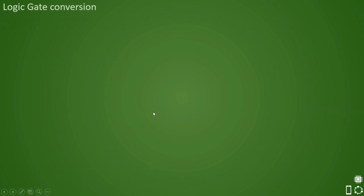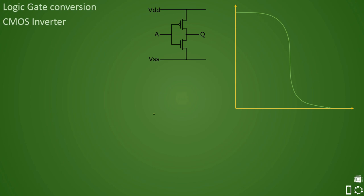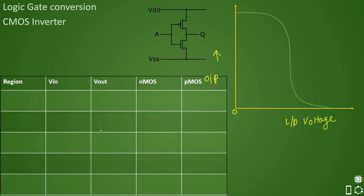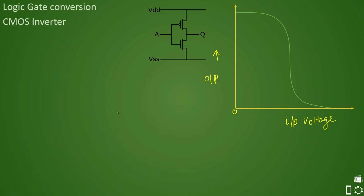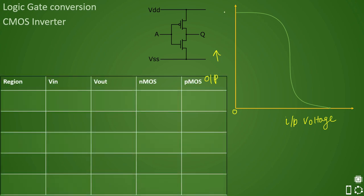Now let us explain the CMOS inverter function in detail. We have the symbol and the input-versus-output characteristics graph. The X-axis is input voltage and the Y-axis is output voltage. To understand these characteristics, we divide the entire graph into different regions, and we will explain each region through a table showing the full progress of the graph. This is very important to understand CMOS functionality.